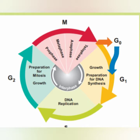In M phase there are four phases: prophase, metaphase, anaphase, and telophase. This completes the cell cycle, resulting in two cells.